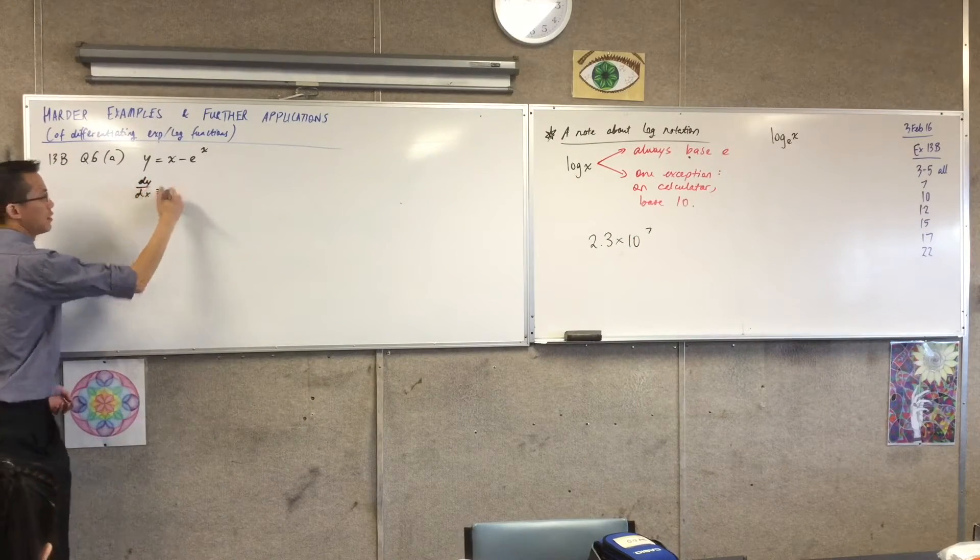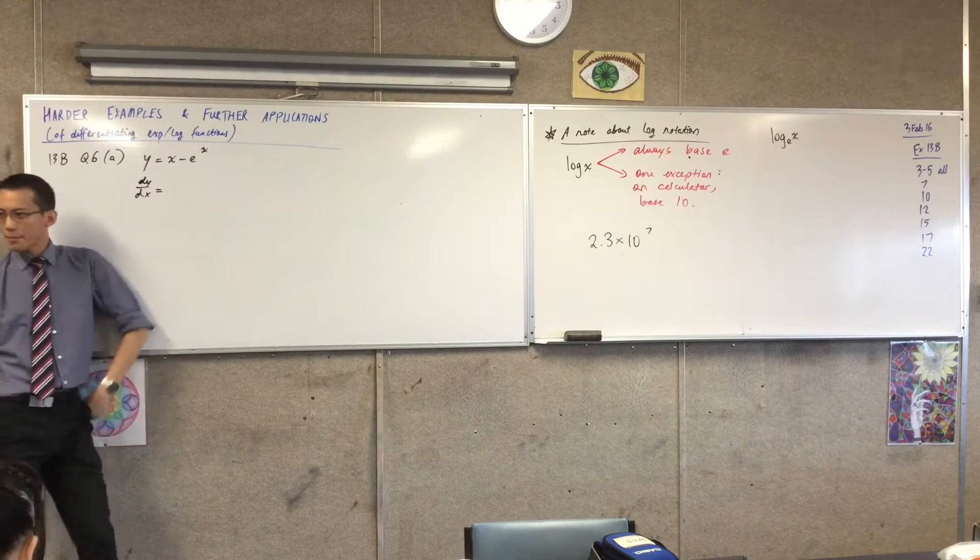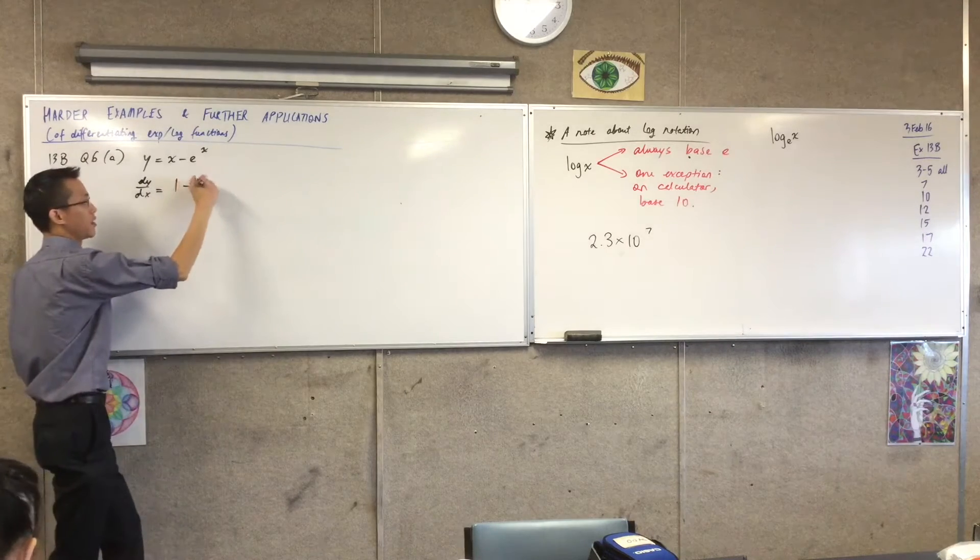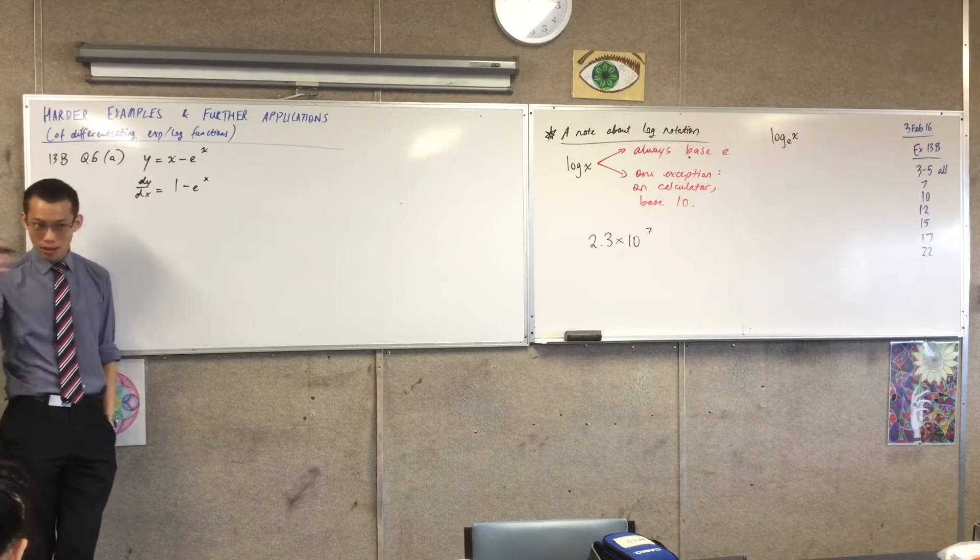So that's why getting the derivatives first will tell us an enormous amount about the graph. The first derivative is... These are really easy. You can read this off for me, right? What happens? 1 minus e^x. Very good.